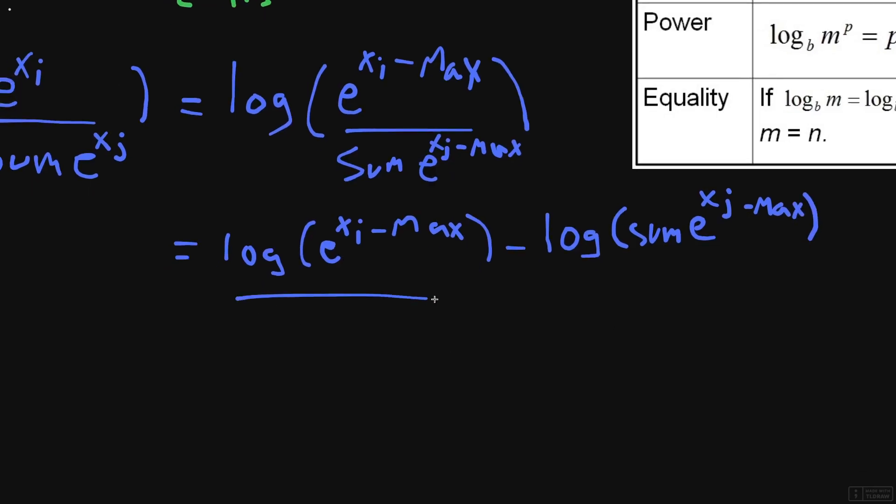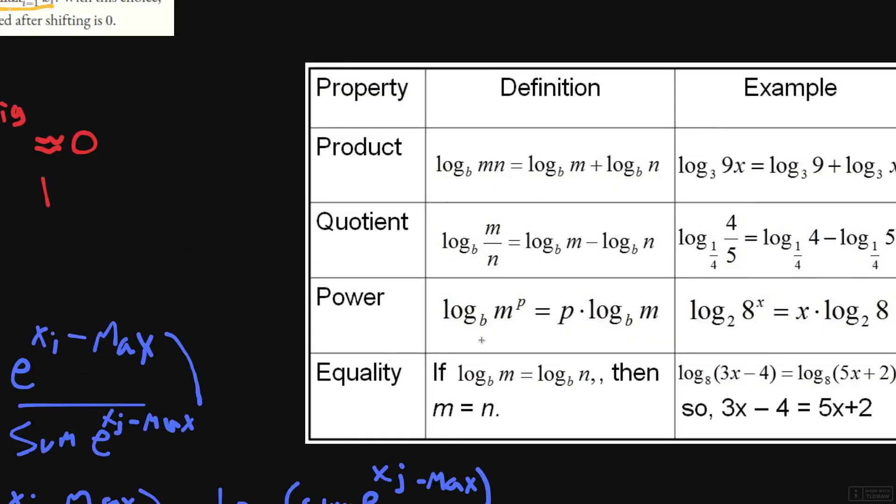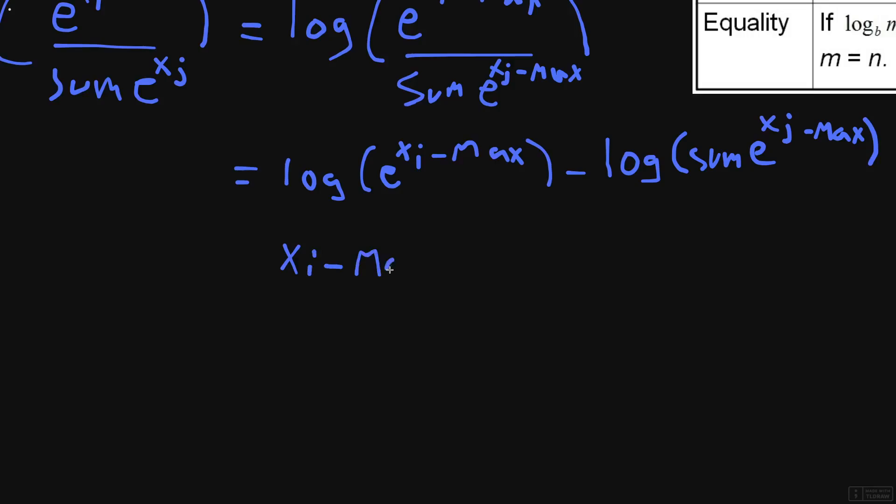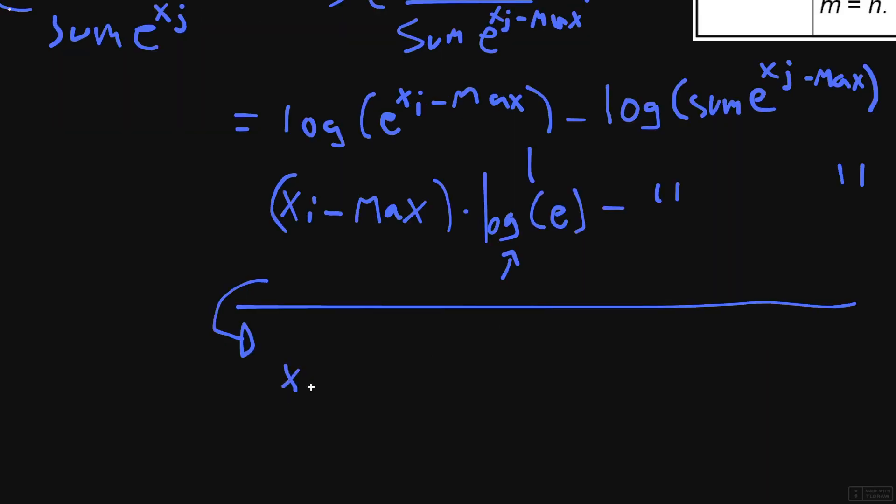And if we look here, there's also something we could do about this part. If you have m to the p, you can just put the p here. So our p is actually this xi minus max times log of e, minus the same thing here. And if we choose the base e here, so this whole thing is ln, well then we're good. This is going to be a big fat one. So this will simplify to that thing, which is going to be our answer: xi minus max minus that thing.